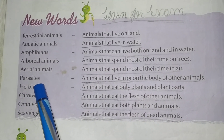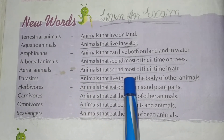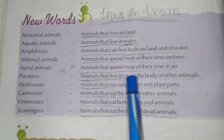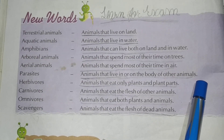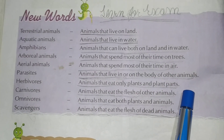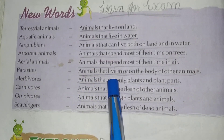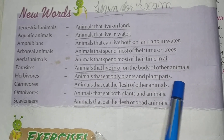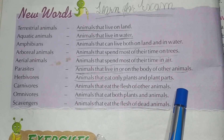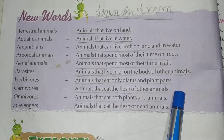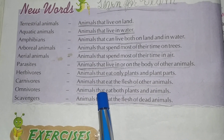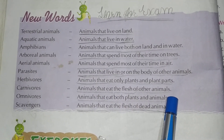Parasites, students. You know what are parasites? Animals that live in or on the body of other animals. Underline. What are herbivores? Animals that eat only plants and plant parts. Carnivores, students: animals that eat the flesh of other animals. What are omnivores? Animals that eat both plants and animals are called omnivores.